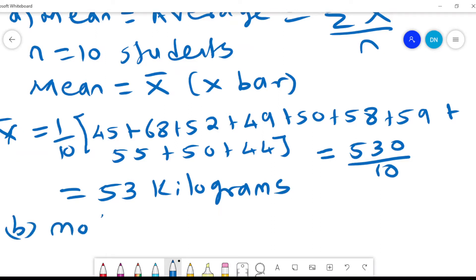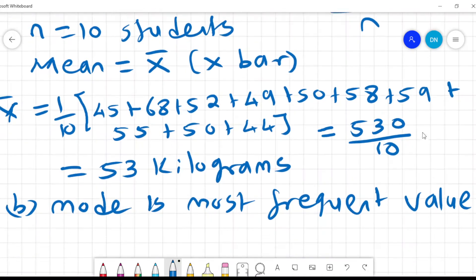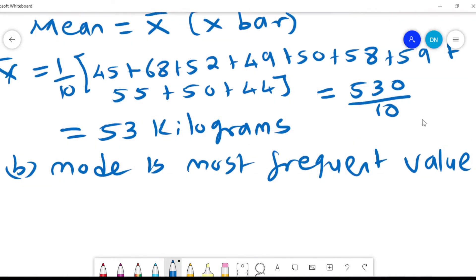So the mode is the most frequent value. And when we look through the data, we find that it's only one value that appears more than once. The others only appear once, and that is the 50 kgs. And since the 50 kgs appears more than once, we say the mode is 50 kgs because mode is the most frequent value.